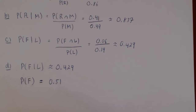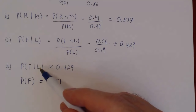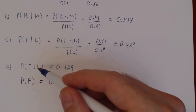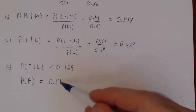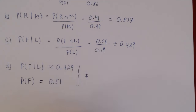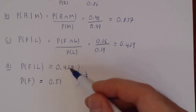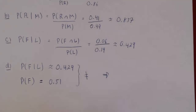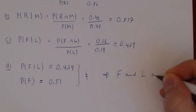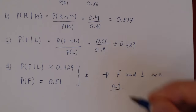The answer is yes — they are not independent. If you know nothing and ask what's the probability of selecting a female from the sample, the answer is 0.51. But if you know the person is left-handed and ask what's the probability of getting a female, the probability changes to about 0.429. So the fact that L has occurred changes the probability of F. The occurrence of L has an impact on the probability of F, which implies that the events F and L are actually dependent — they are not independent.